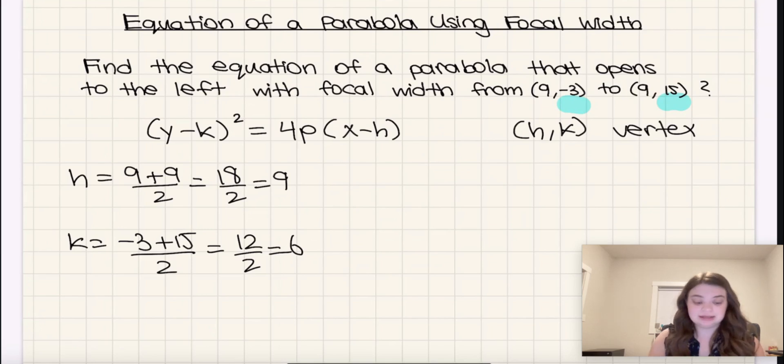So the vertex is 9, 6 so far. Next, we need to find the p value. So first, we need to find the distance of the focal width, like the vertical distance specifically. So that is going to be 15 minus negative 3 is going to be our focal width. So that's going to be 18.